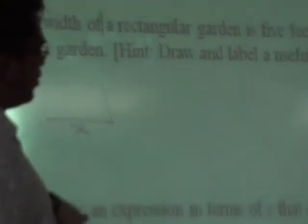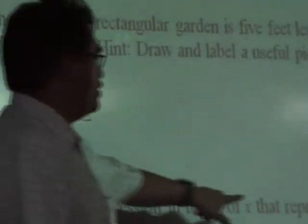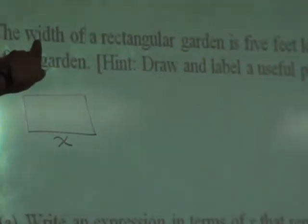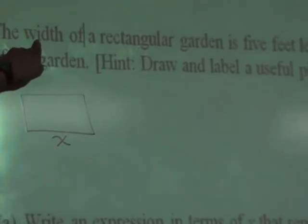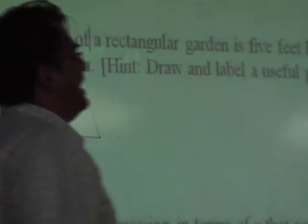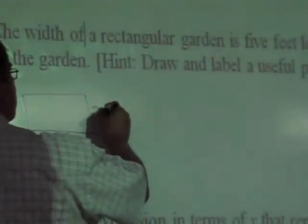Now, I need to come up with an expression for the width of the garden. Now, read carefully. The width is 5 feet less than the length. Since we are saying that the length is X, how do I say 5 feet less than X? X minus 5. Very nice. X minus 5.